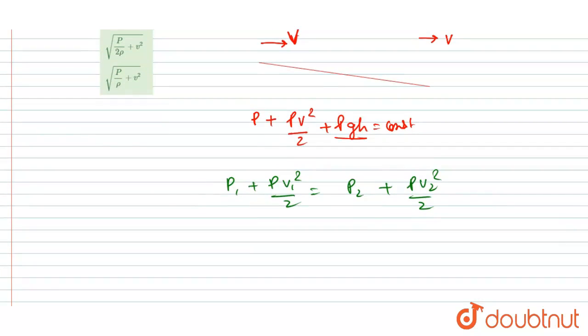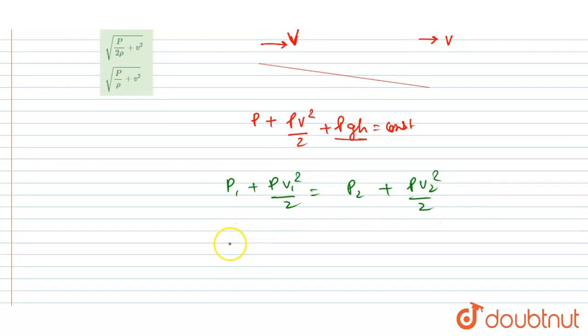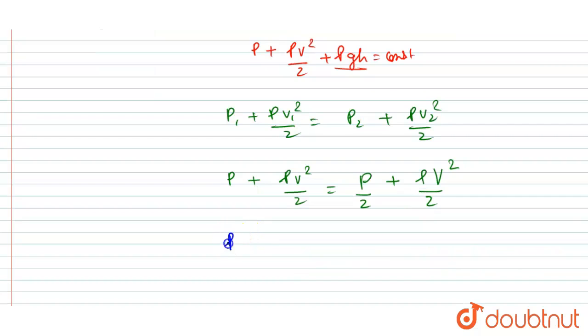So p1 is p and the initial velocity was small v, and p2 is p by 2. Plus rho, if you see, finally the velocity is capital V whole square. So I will write p plus rho v square by 2 is equals to p by 2 plus rho capital V whole square by 2.